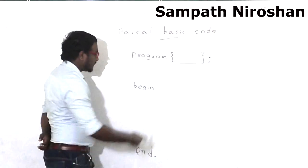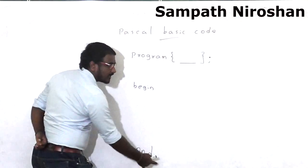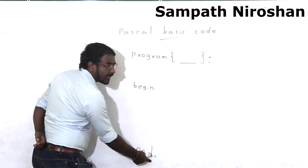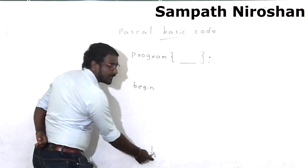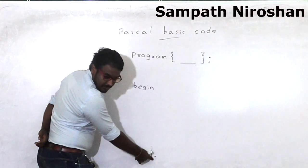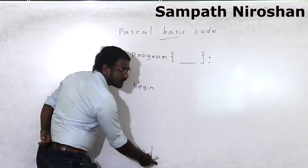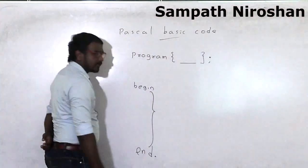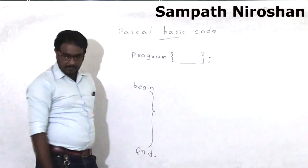Once you initiate it, you have to end it saying 'end.' with a dot. Keep in mind you don't keep any semicolons here—this is the full stop for the entire program. In between this space, you are writing the body of the program.